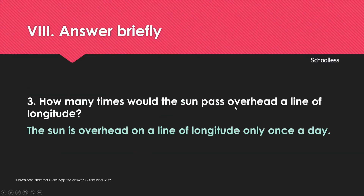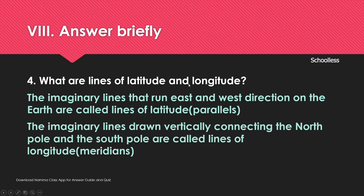The sun passes overhead on a line of longitude only once a day. Lines of latitude are imaginary lines that run east to west on the Earth. Lines of longitude run north to south and connect the poles.